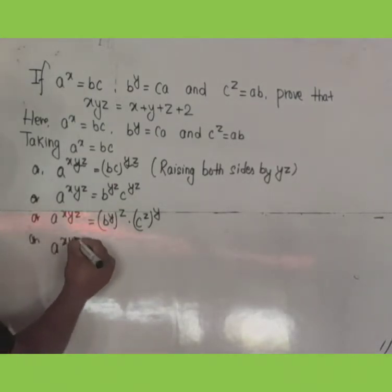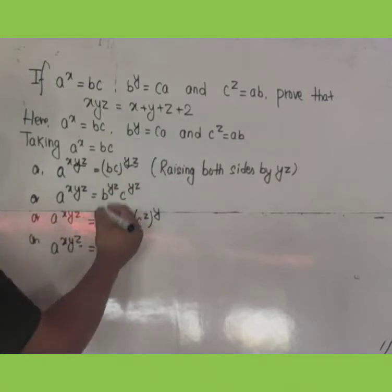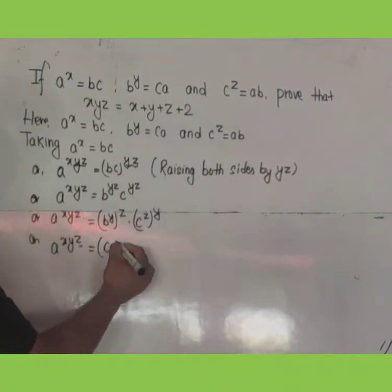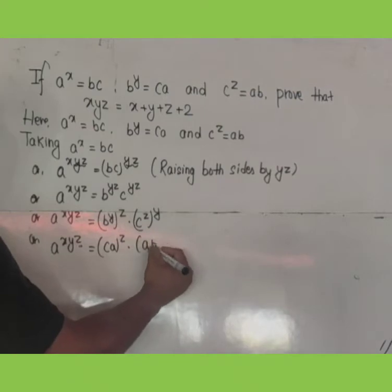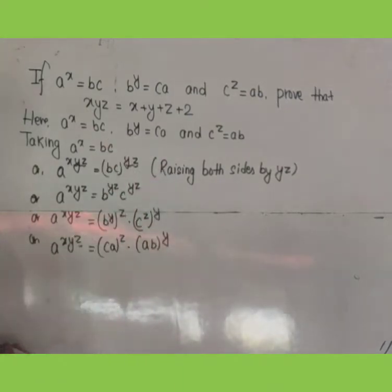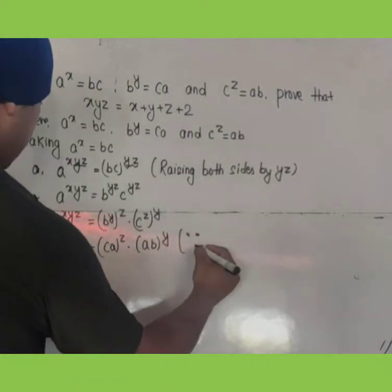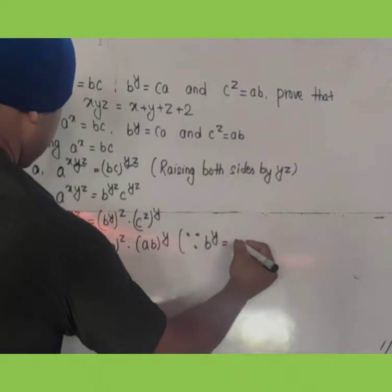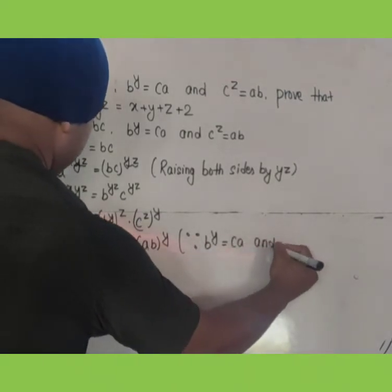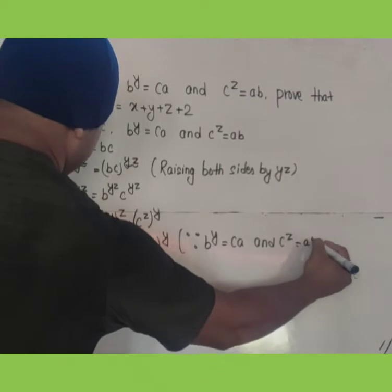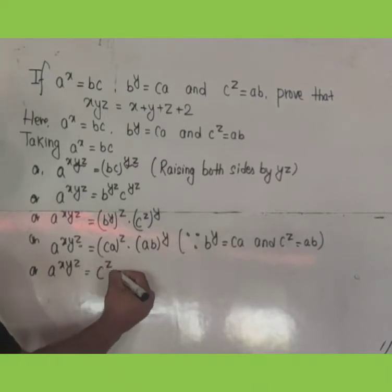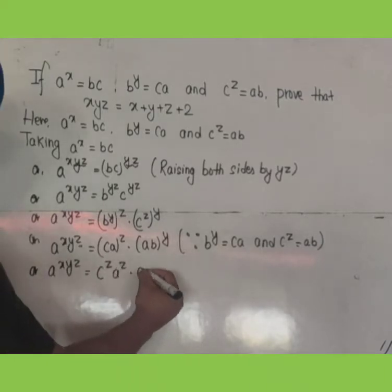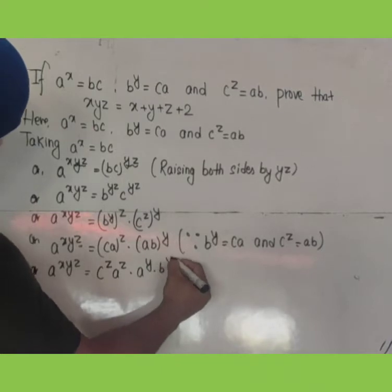So a^(xyz) = (ca)^z · (ab)^y. Now b^y can be written as ca raised to z, and c^z can be written as ab raised to y, because b^y = ca and c^z = ab. Expanding: this becomes c^z · a^z · a^y · b^y.